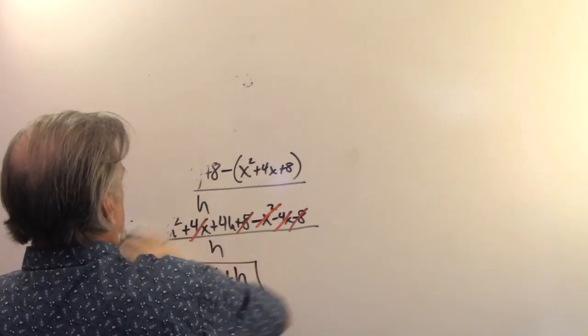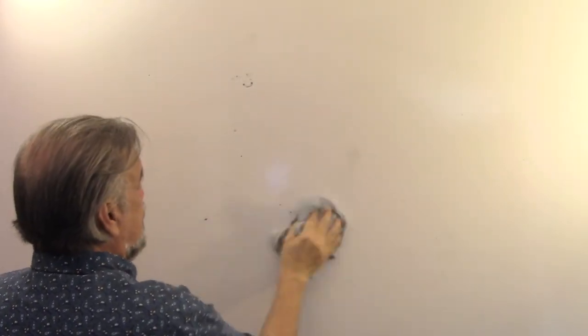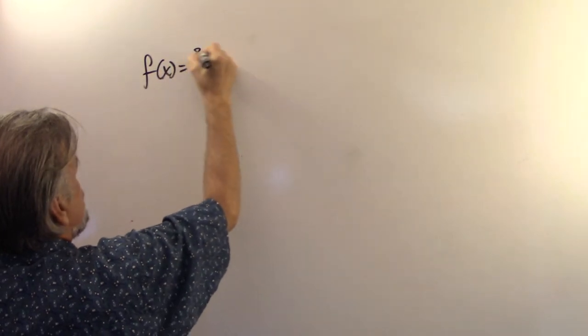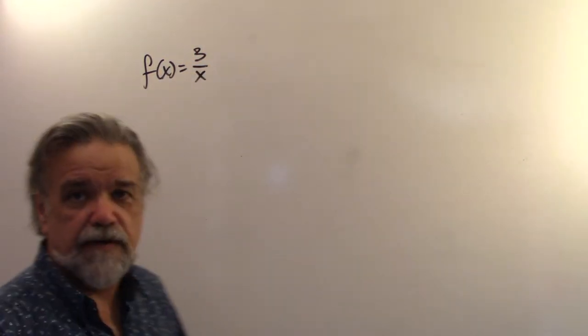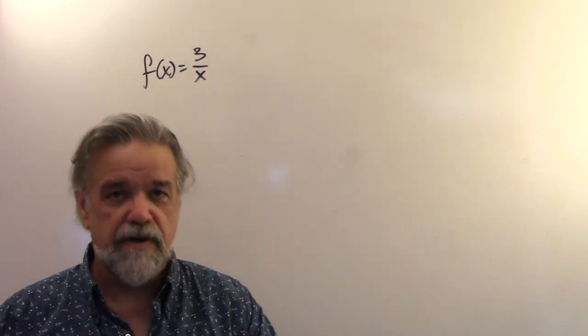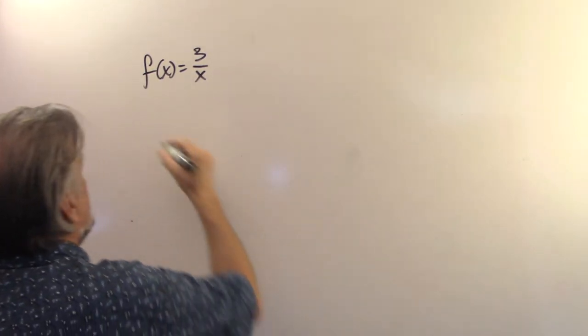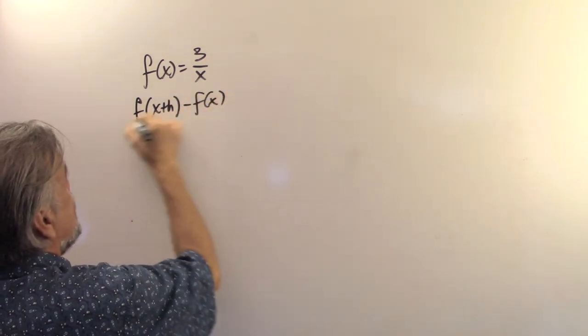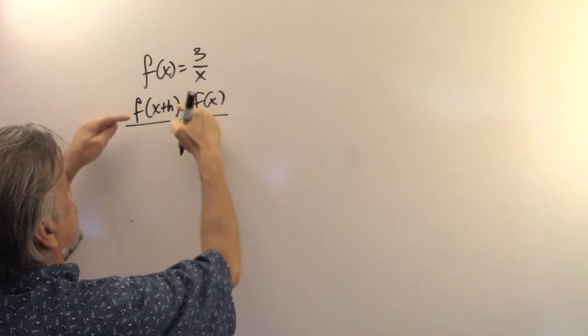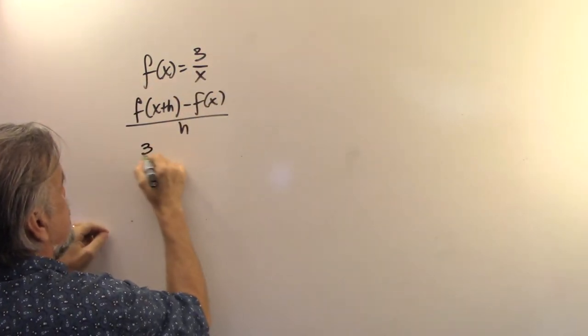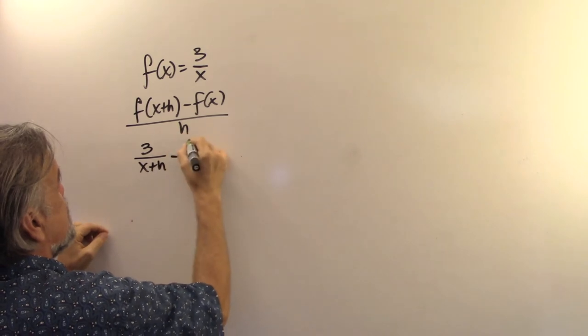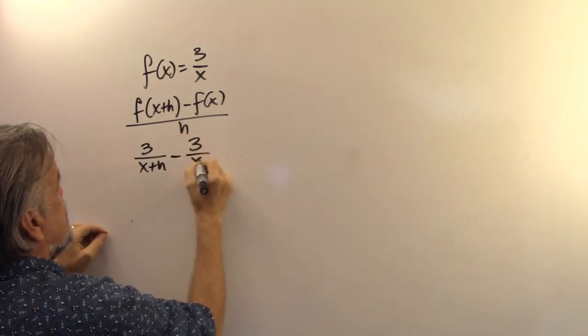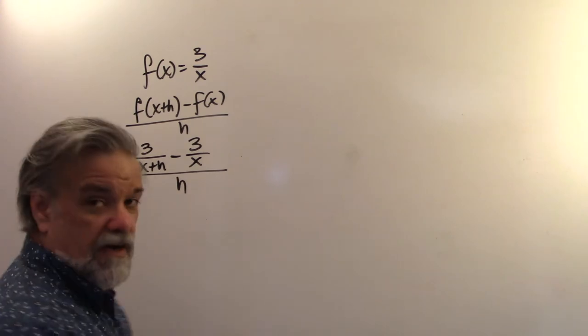Let's take the example of f of x equals 3 over x. And I want the difference quotient of that bad boy. All right. I'm going to have f of x plus h minus f of x over h. f of x plus h is going to be 3 over x plus h minus 3 over x. And the whole thing is over h.